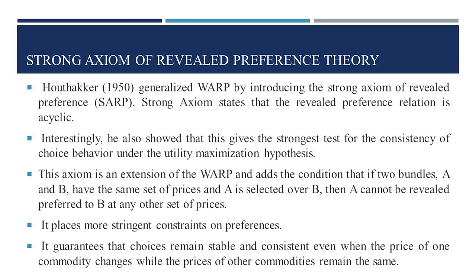The Strong Axiom is an extension of WARP and adds the condition that if two bundles, say A and B, have the same set of prices and A is selected over B, then A cannot be revealed preferred to B at any other set of prices. By placing more stringent constraints on preferences, this axiom guarantees that choices remain stable and consistent even when the price of one commodity changes while the price of another remains the same.